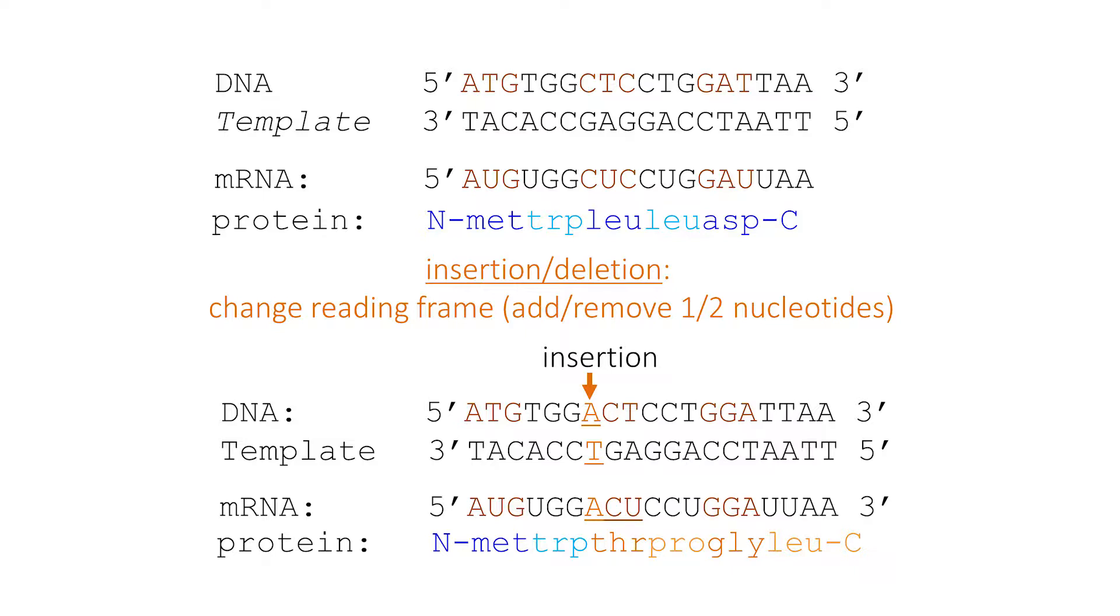Look what happens to the protein coding sequence. You now see you start the same: methionine, tryptophan. But now, instead of having leucine, proline, aspartic acid, you now have threonine, proline, lysine, and so on. So you've changed the reading frame and the protein that is made from this particular gene. And that might profoundly change the function of the protein. It might make it non-functional. It might sometimes give it a new function. It might give it a function that causes disease. So this is the insertion changing the reading frame, and the same idea is true for a deletion changing the reading frame.